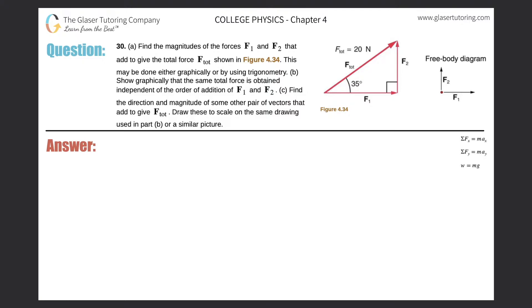Number 30, letter A. Find the magnitudes of the forces F1 and F2 that add to give the total force F total shown in figure 4.34.